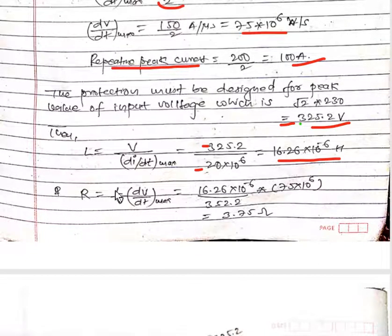To calculate R we have L upon dV/dt max. On substituting the value we will get 3.75 ohm.